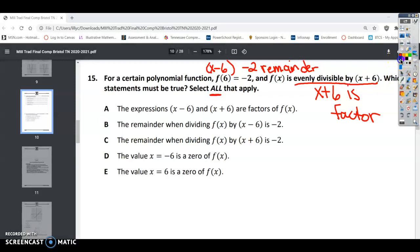All right, let's look at our answer choices here. So we have the expression x minus 6 and x plus 6 are factors. All right, they're factors if the remainder is 0. This one said it's evenly divisible, so we know that this one is a factor, but this one has a remainder, so they are not both factors.